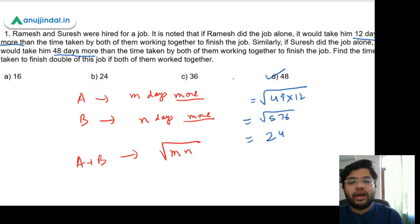So you just need to identify this type where it is given it takes some days more than the time taken by both of them together. In those questions, you can use this formula.